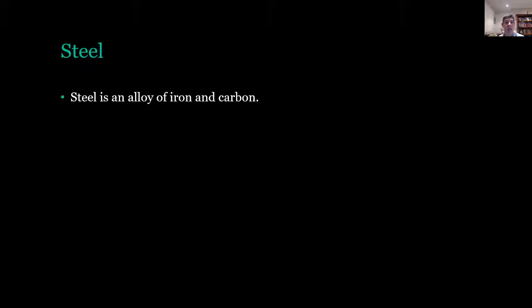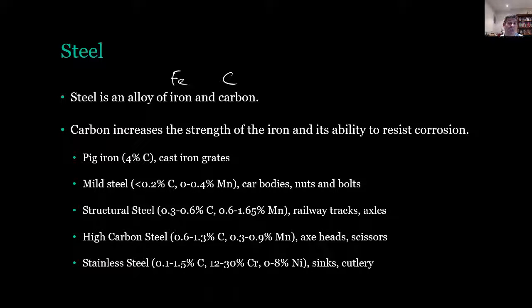So then to have a quick look at a couple of these in a little bit more detail. Firstly steel: steel is an alloy of iron and carbon and the proportion of carbon actually affects the strength of the steel. So you can see we have here a couple of different types of steels from pig iron, which is kind of your basic steel cast iron, up to things like stainless steel where you have very small amounts of carbon and perhaps some additional elements, in this case chromium and nickel, which are used to change those properties of the iron and have uses such as sinks and cutlery.